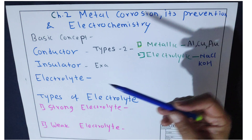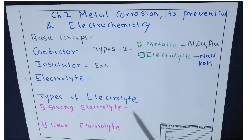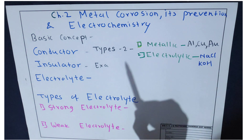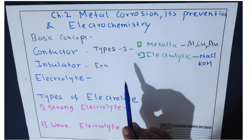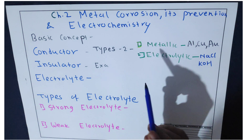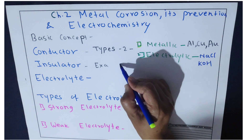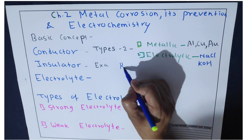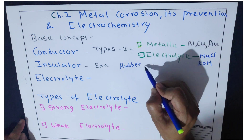Next is insulator. An insulator is a substance which does not allow electric current to pass through it. Examples of insulators are rubber and plastic.